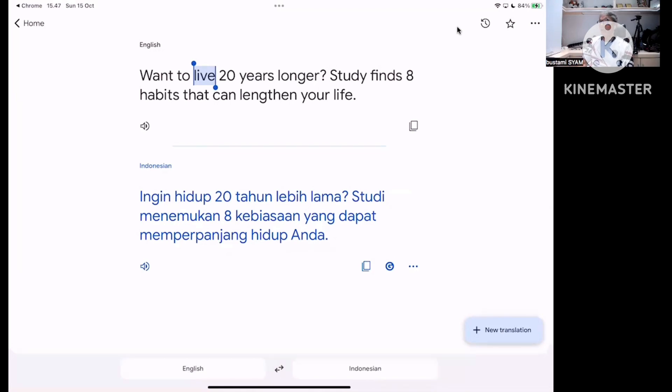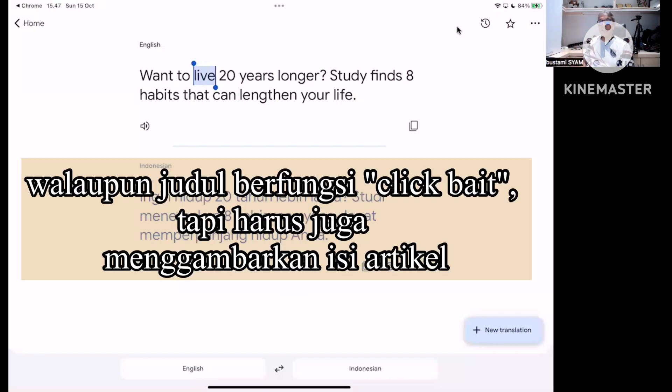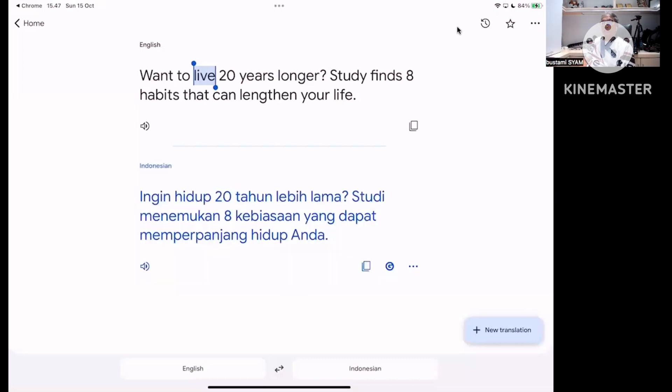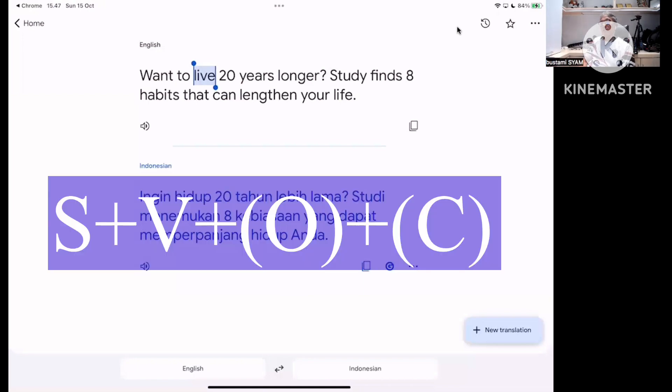Alright, 'study finds'. Now we want to try to find where is the subject of the sentence, because a perfect sentence has a subject, a verb, an object, a complement. Sometimes a sentence doesn't need an object and complement, but sometimes a sentence needs an object and complement.